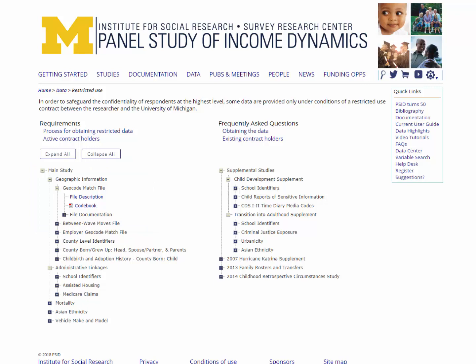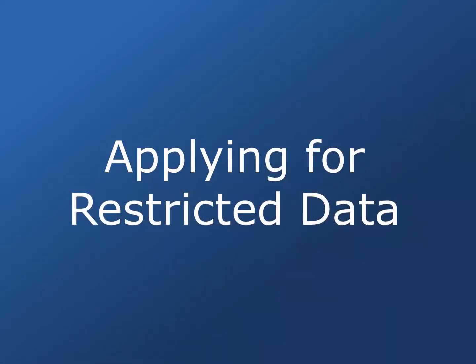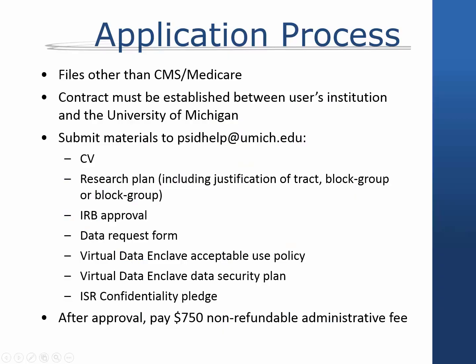As restricted files are updated or new ones are released, additional information will be added to this webpage. To obtain access to PSID restricted data files, you will need to complete a restricted data application. To apply for restricted data other than Medicare linkages, the following items must be submitted through the PSID's Help Desk at psidhelp@umich.edu: a curriculum vitae for all researchers, a research plan, non-exempt institutional review board approval, a completed data request form, as well as the Virtual Data Enclave Acceptable Use Policy Data Security Plan.